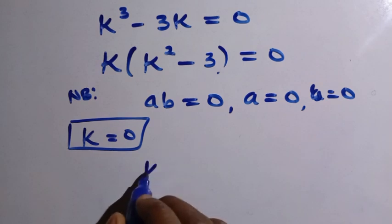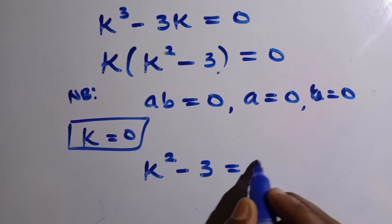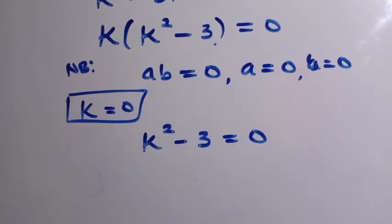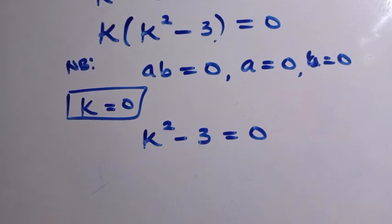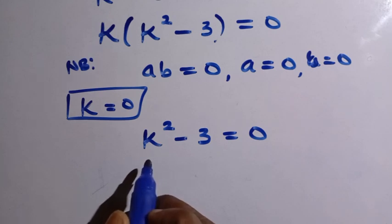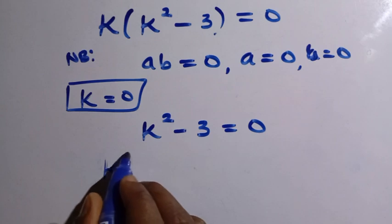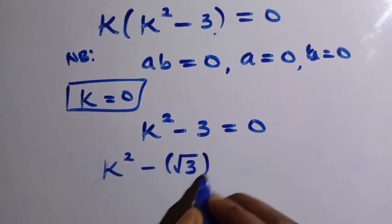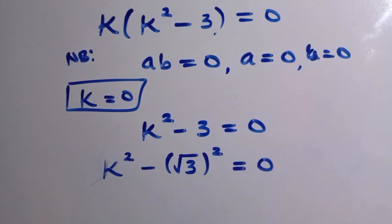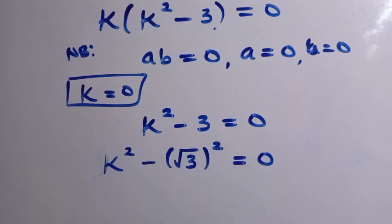Or we can still have our K raised to the power of 2 minus 3 equals 0. So after having this, then we need to provide solution to this K here as this has been reduced to quadratic. Then what we do here is suppose I write this thing as K squared minus square root of 3 squared equals 0. This is the same thing as 3 because this square and square root cancel each other.